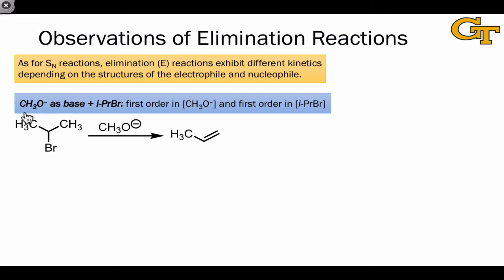For example, when we use methoxide as the base and isopropyl bromide as the electrophile, the resulting elimination process—